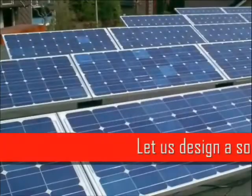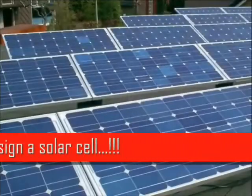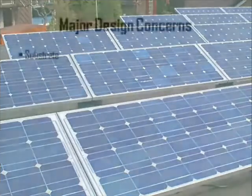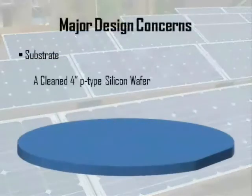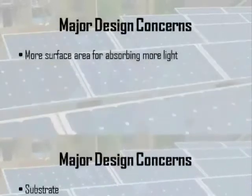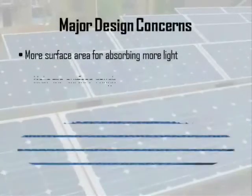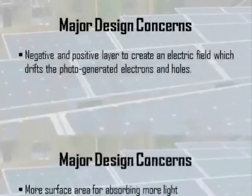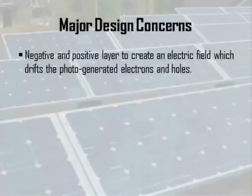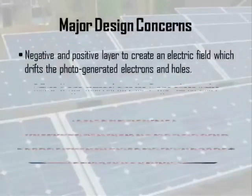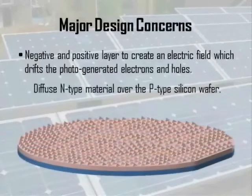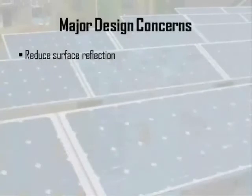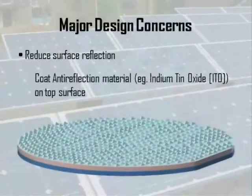Let us design a solar cell. The substrate chosen for the fabrication of a solar cell is a silicon wafer. Make the surface rough for an enhanced surface area for maximum absorption of light. Diffusing N-type material helps generate an electric field across the junction that aids in drifting electrons and holes. Anti-reflection coatings such as ITO reduce surface reflection.